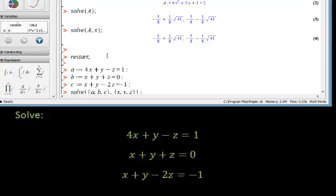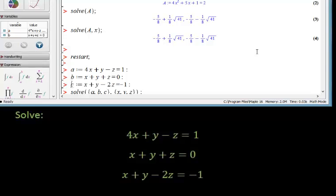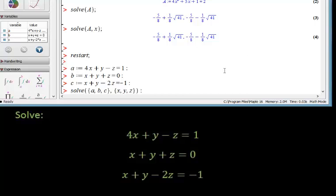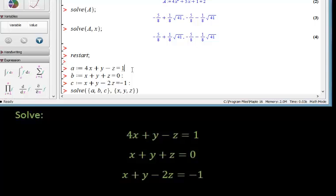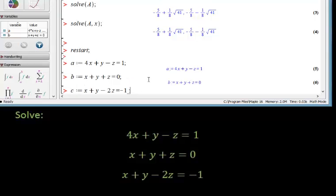To do a system of linear equations, assign names to each equation. For example, lowercase a to 4X + Y - Z = 1, b to be the second one, c to be the third one. Then I would say solve a, b, c, and then I would say with respect to x, y, and z. That would give me the solution to the linear system of equations.